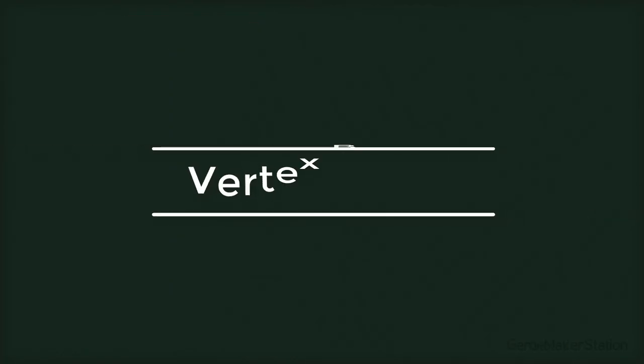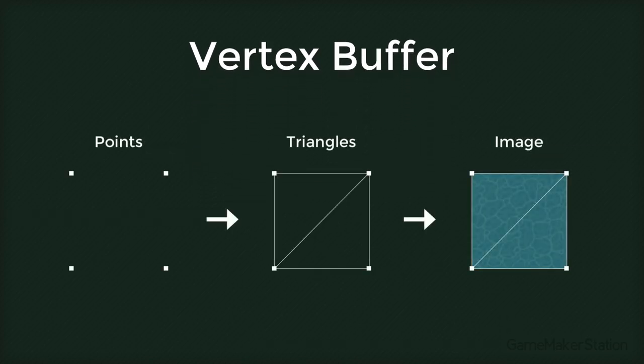Instead, we are gonna use a vertex buffer. A vertex buffer is how you tell the GPU to draw something. It's kind of low level — you have to build everything with triangles.